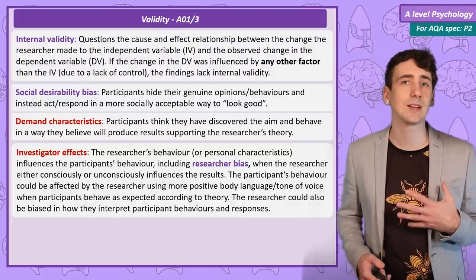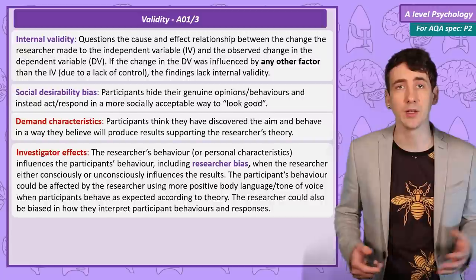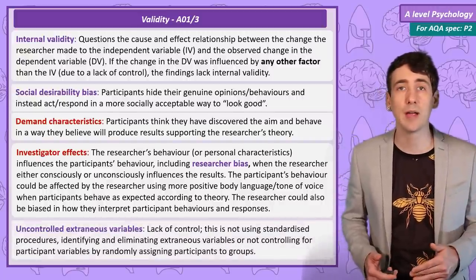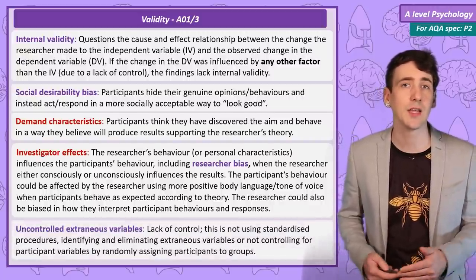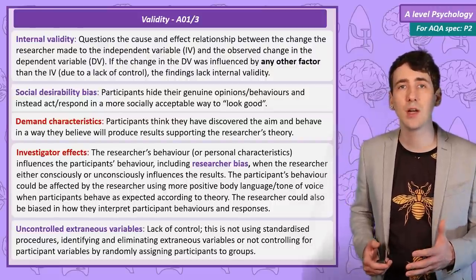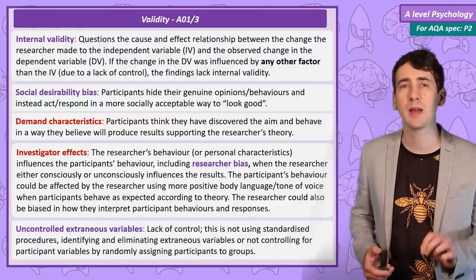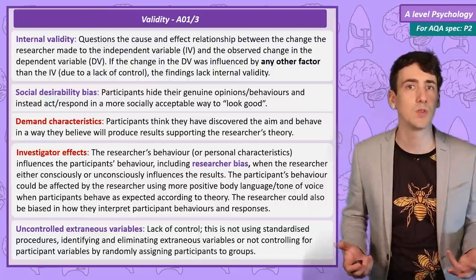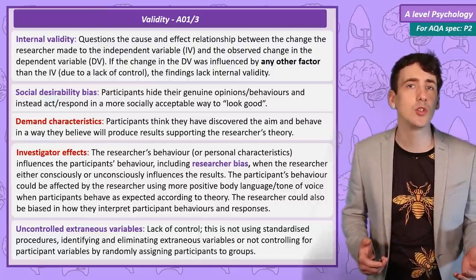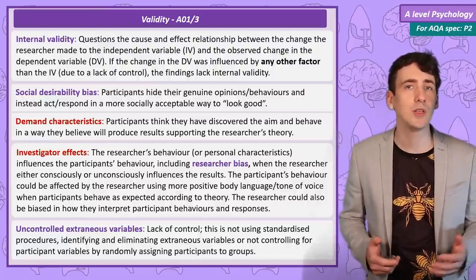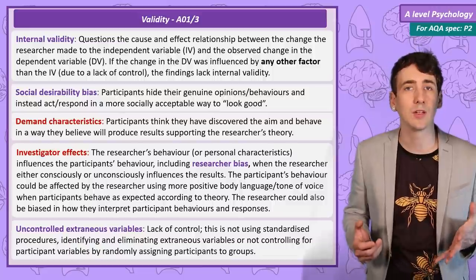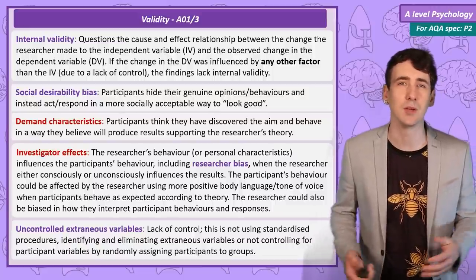Conscious or unconscious researcher bias can occur when the researcher interacts with participants or interprets their behaviour differently depending on what condition they are in, usually in a way that produces results supporting their research hypothesis. A study also lacks internal validity if it has been poorly conducted, such as participant variables not being controlled or by not using standardised procedures. These are all ways that the change in the dependent variable may not be due to the manipulation of the independent variable, but some other factor, making the results effectively meaningless.